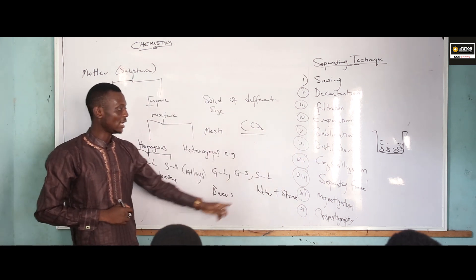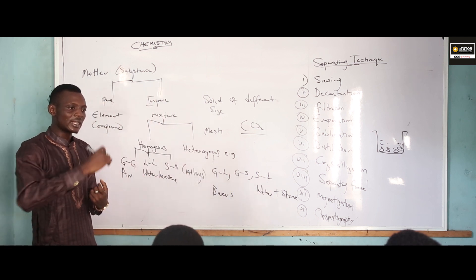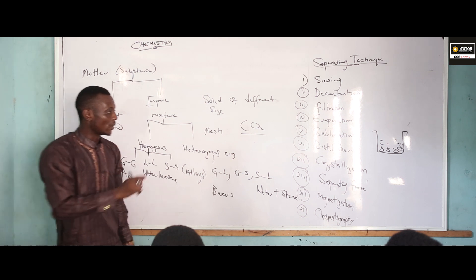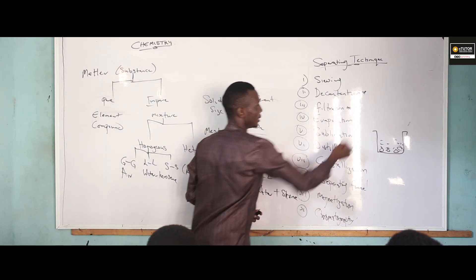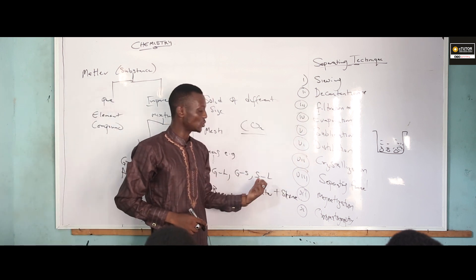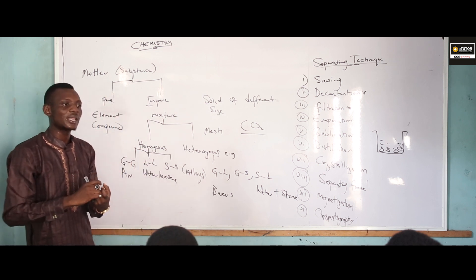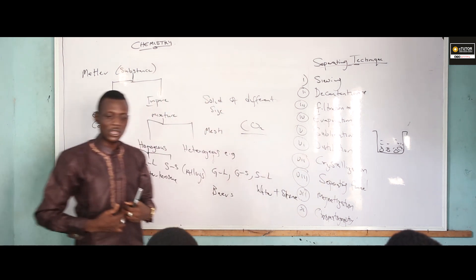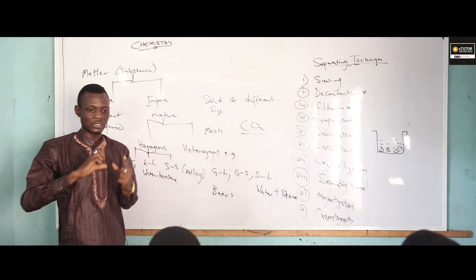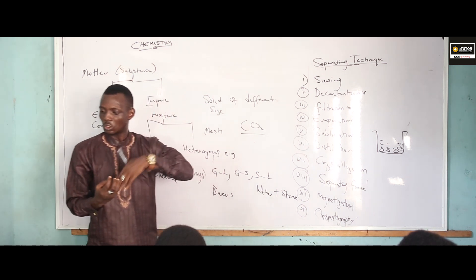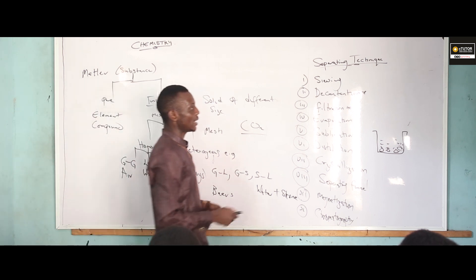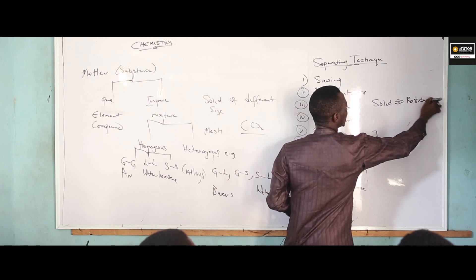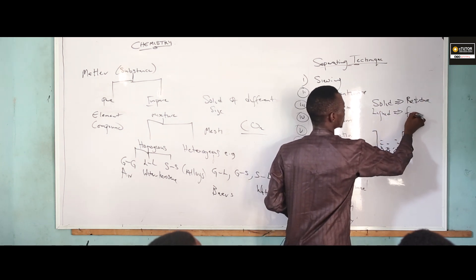The next one is filtration. Here we are having a solid particle in liquid, but this time the solid forms a suspension in that liquid. We are going to use filtration, not decantation. We use a filter paper — a porous material — that is going to allow the liquid to pass through and hold the solid particles. The solid that we recover here is known as the residue, while the liquid recovered is known as the filtrate.